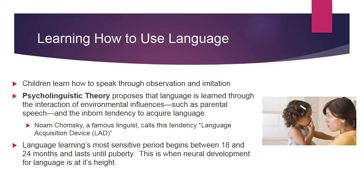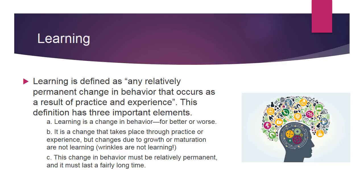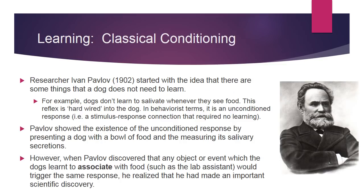Learning is defined as any relatively permanent change in brain that occurs as a result of practice and experience. This definition has three important elements: learning is a change in behavior, for better or worse; it is a change that takes place through practice or experience, but changes due to growth or maturation are not learning; and this change in behavior must be relatively permanent, lasting a fairly long time. When you've learned something for a test and 20 minutes after walking out of the exam it's gone, you haven't actually learned it.